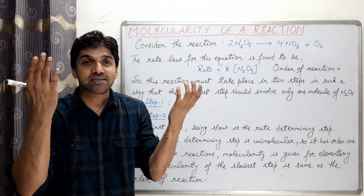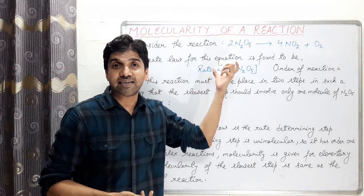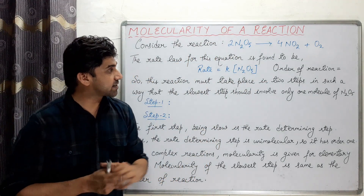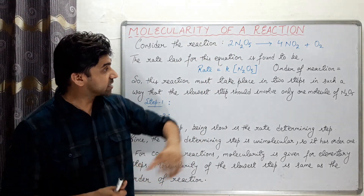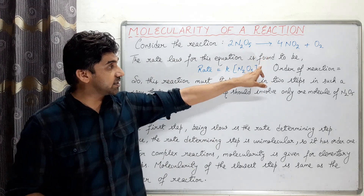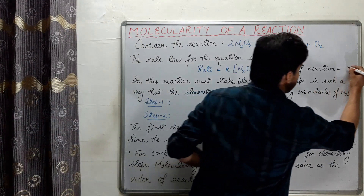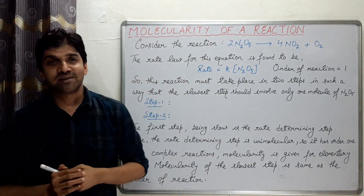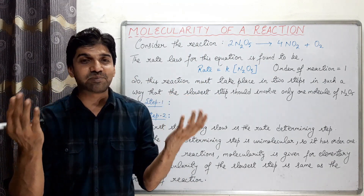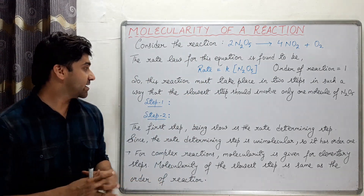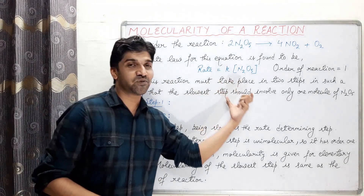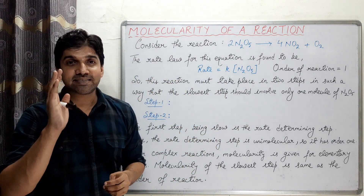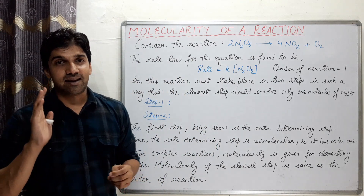The sum of the exponents of the concentration terms of the reactants in the rate law expression is called the order of reaction. For N2O5 decomposition, the order is 1 — it is a first order reaction. This is because the reaction occurs in multiple steps.